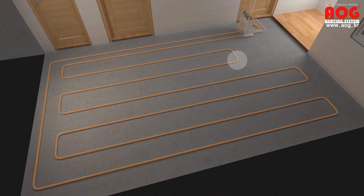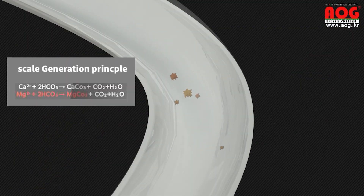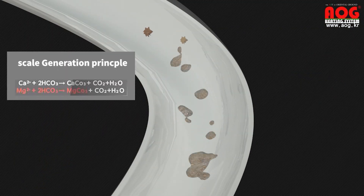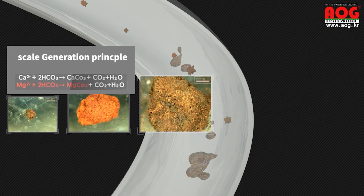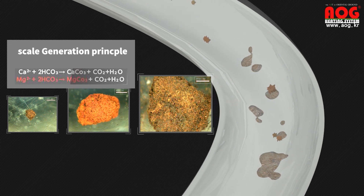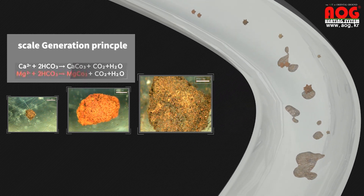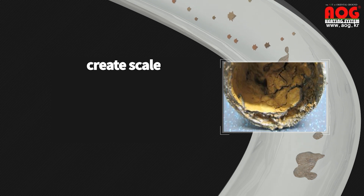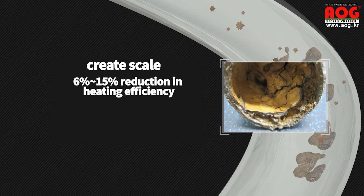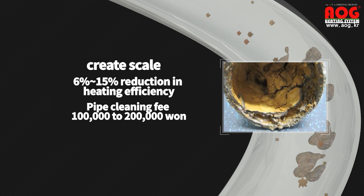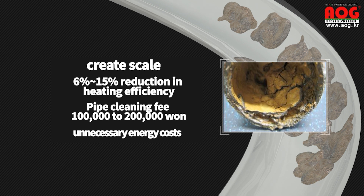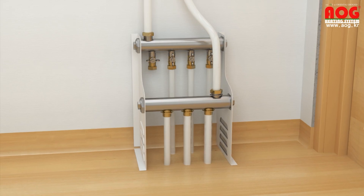After a long period of time, as the heating temperature changes, metal products and non-ferrous metals inside combine to create organic matter, which circulates along the heating pipe and sticks to the inside of the heating tube, causing scale buildup. As a result, heating efficiency decreases and the cost of piping to solve the problem is about 100,000 to 200,000 won, resulting in unnecessary energy costs.